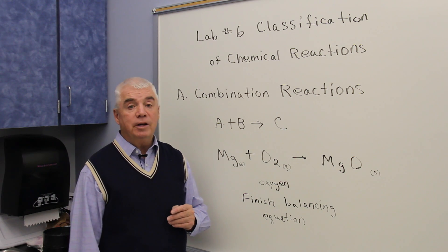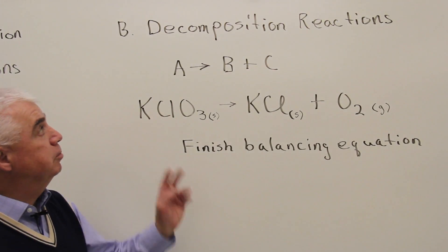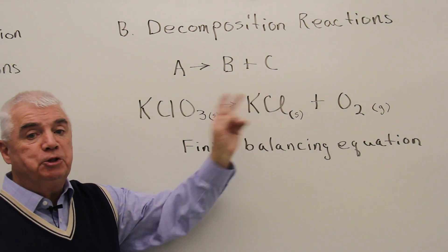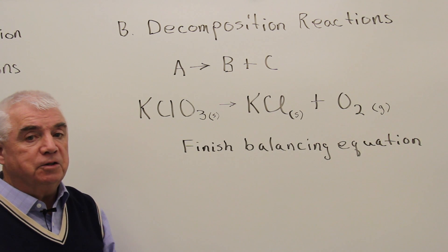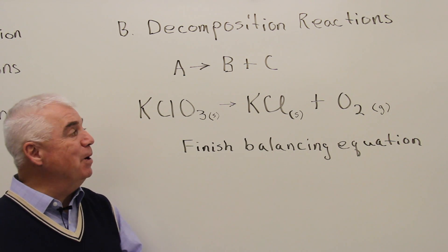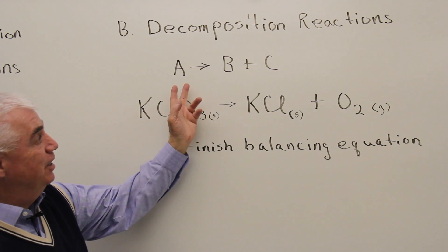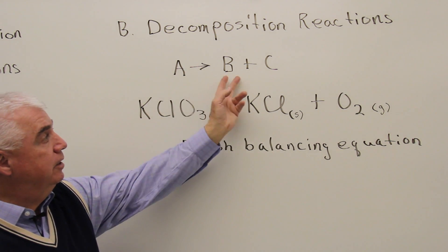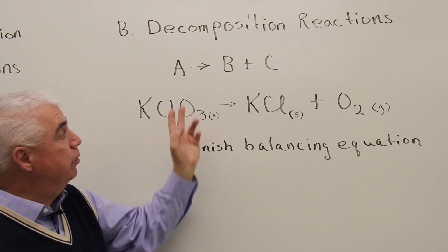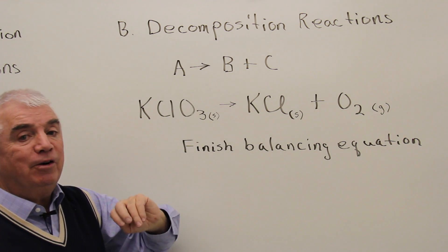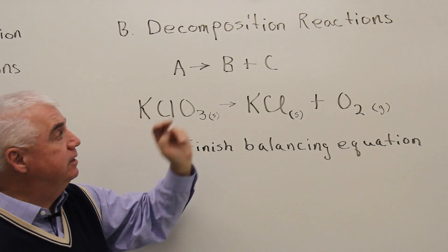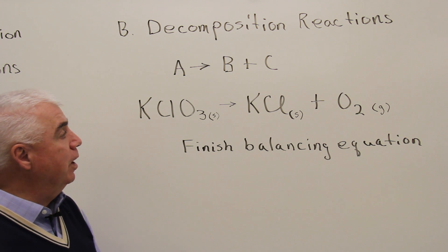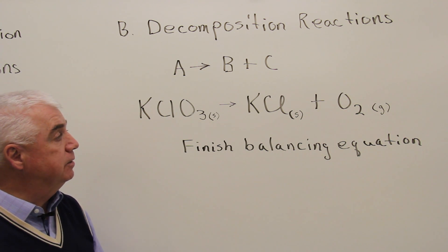Let's look at Part B. In Part B, we're looking at decomposition reactions — that means something breaks apart. The general formula is A going to B plus C. In other words, one material on the left, two materials or more on the right-hand side.